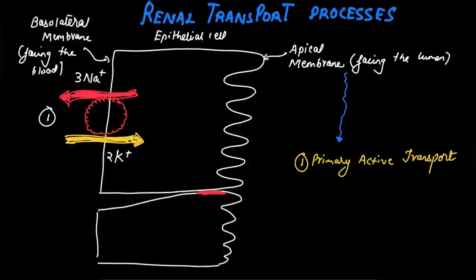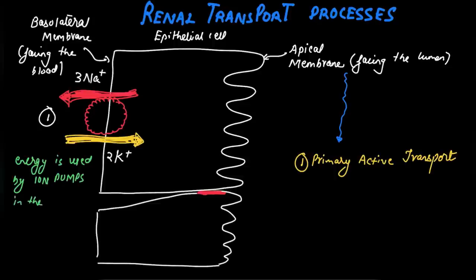It is primary active because sodium ions are transported against the concentration gradient, and the energy is used directly by ion pumps. These ion pumps, as we have learned previously, are integral membrane proteins and they use this energy directly in the process of transport itself.